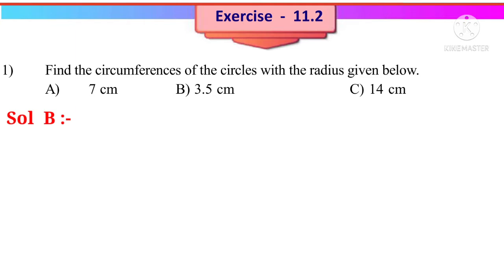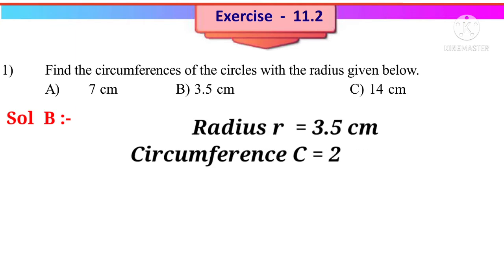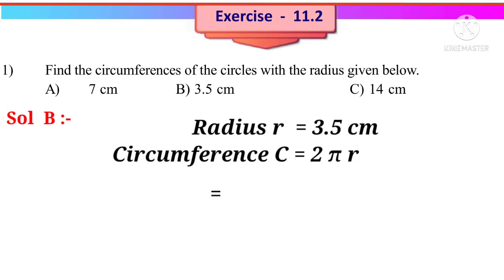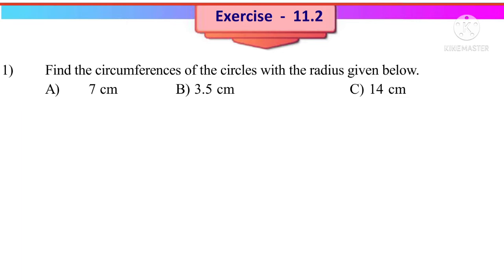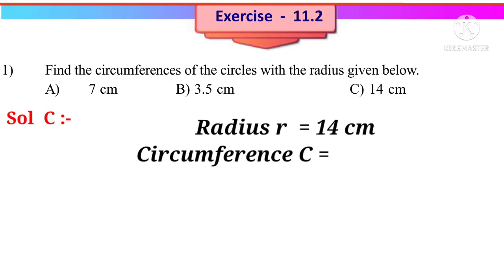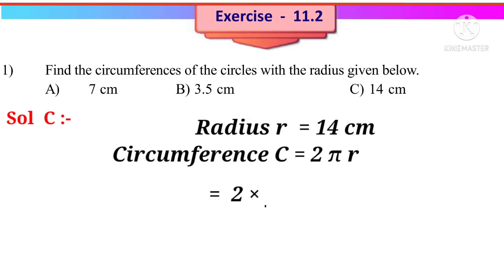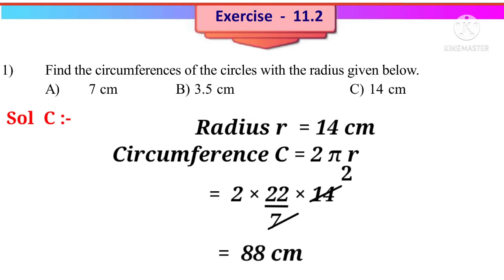Solution (b): Radius r equals 3.5 centimetres. C equals 2πr equals 2 × (22/7) × 3.5. On simplification, 7 cancels and 3.5 becomes 0.5, giving 2 × 22 × 0.5 equals 22 centimetres. Solution (c): Radius r equals 14 centimetres. C equals 2 × (22/7) × 14. On simplification, 7 into 14 gives 2, so 2 × 22 × 2 equals 88 centimetres.